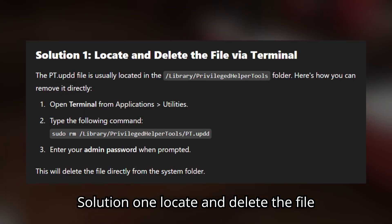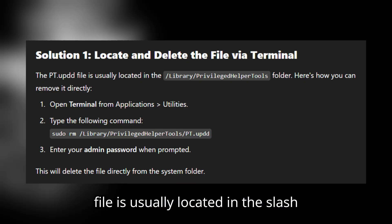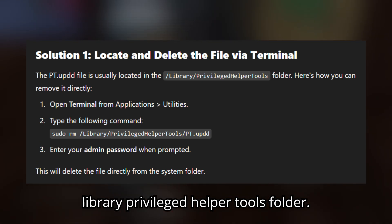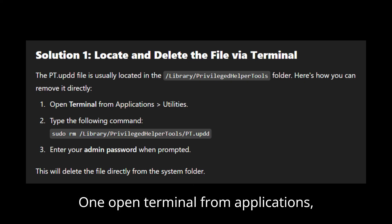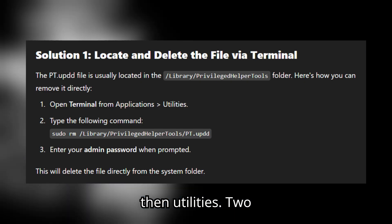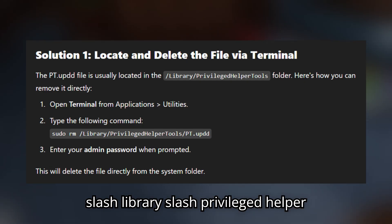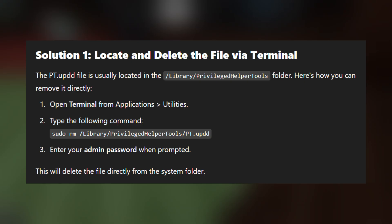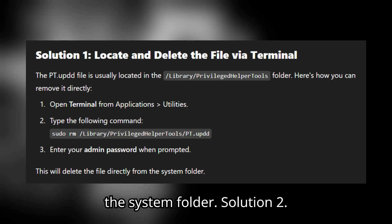Solution 1: Locate and delete the file via Terminal. The pt.updd file is usually located in the /Library/PrivilegedHelperTools folder. Here's how you can remove it directly. Open Terminal from Applications, then Utilities. Type the following command: sudo rm /library/privilegedHelperTools/pt.updd — then enter your admin password when prompted. This will delete the file directly from the system folder.